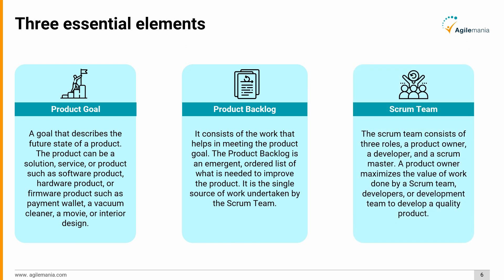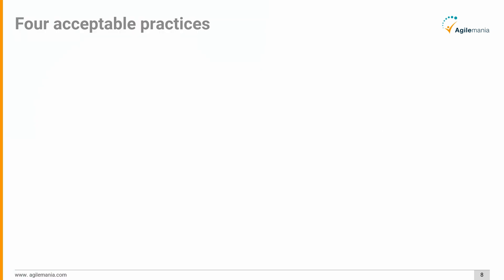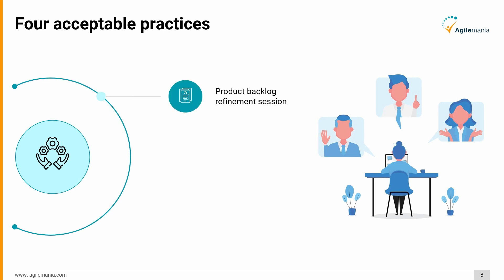Lastly, the scrum team. The scrum team consists of three roles: a product owner, a developer, and a scrum master. A product owner maximizes the value of work done by the scrum team, and developers or the development team work to develop a quality product.